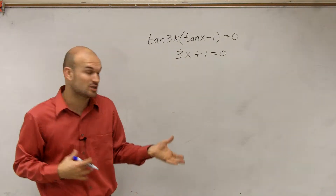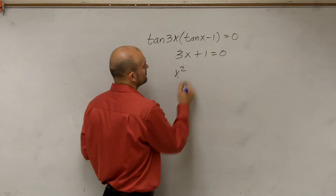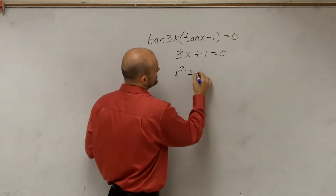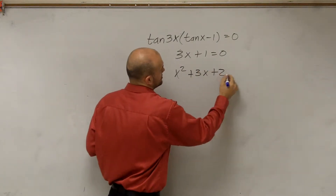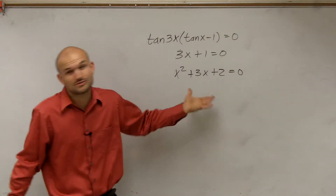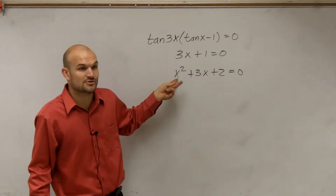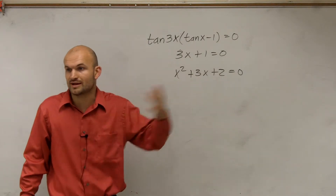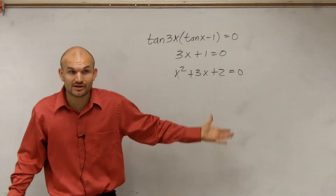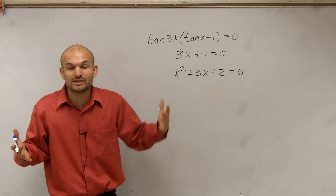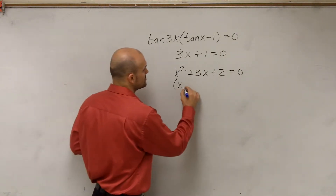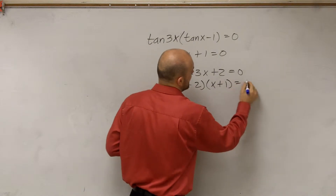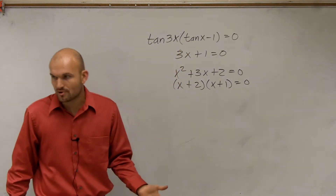Then in Algebra 1 and Algebra 2, we focused more on quadratic equations. So let's do x squared plus 3x plus 2 equals 0. Now we can't just use inverse operations, because we have a quadratic term and a linear term. So to solve this, we had to use — Trevor — what type? Factoring, right? We use factoring because once we have something factored, we can apply the zero product property.